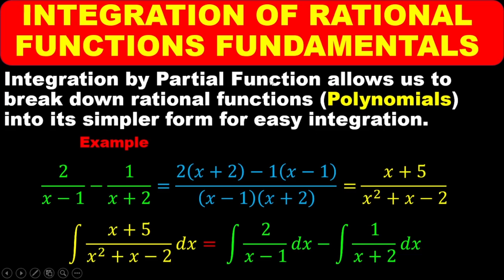Integration by partial fraction allows us to break down rational functions — that is, polynomials — into simpler form for easy integration. If you look at this fraction here, it should be easier for us to resolve it. How do we do that? First, you find the LCM, then you multiply this by the LCM and you multiply this one by the same LCM. So the LCM is going to be (x minus 1) times (x plus 2). When you look at the blue string, you can see that this is the LCM. Multiplying by the LCM, the (x minus 1) will cancel, and basically we cross multiply.